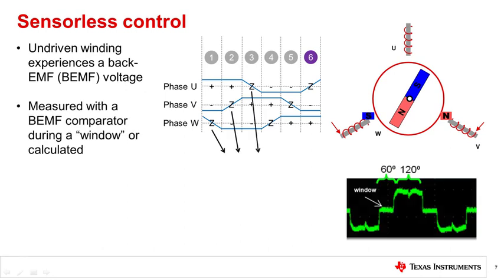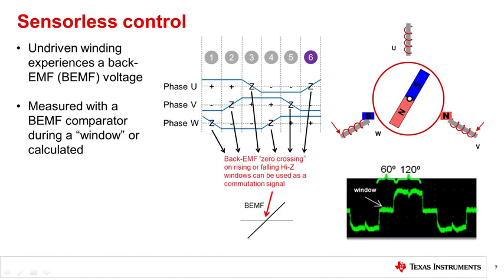When a motor is spinning, the undriven winding experiences a back EMF voltage due to the changing magnetic field across the coil of wire. The voltage changes polarity during the high Z period, or window, and creates a zero crossing. By identifying the zero crossing point in the window, we can deduce the rotor position and determine how to commutate the motor.